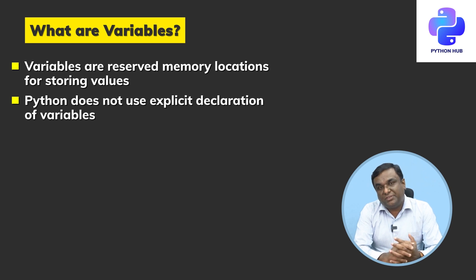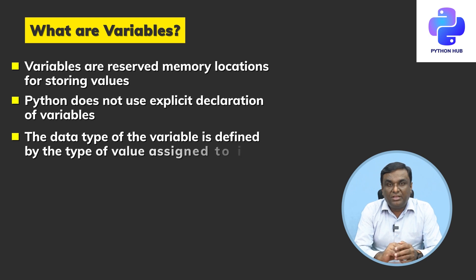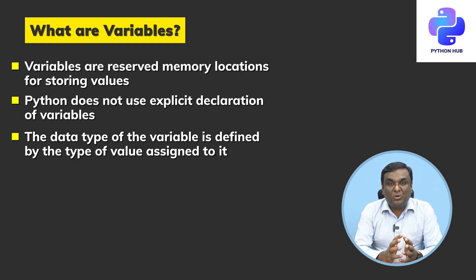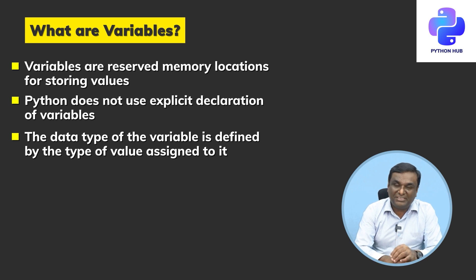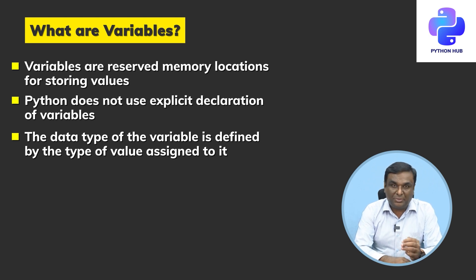Python does not use explicit declaration of variables — you need not declare the variable before writing code. In other programming languages, you generally declare the variable first with its data type and then start assignment. But Python does not require that. You can directly start assigning values, and based on the value assigned, it will take up the appropriate data type.